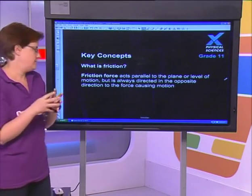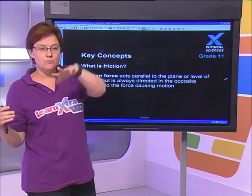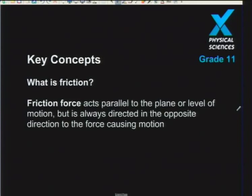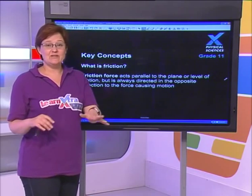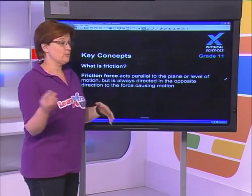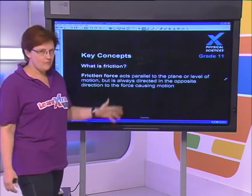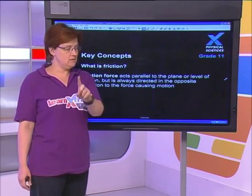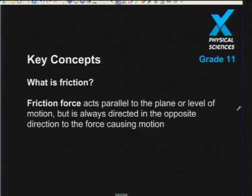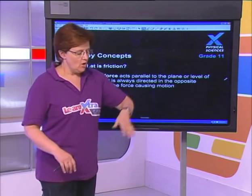Welcome back Grade 11s. Now we need to formalize what we've seen. What is friction? You've heard this term since primary school. We define friction as the force that acts parallel to the plane or level of motion, and is always directed in the opposite direction to the force causing motion. This is really important — even on the slope we just used, friction goes along the slope but opposes the direction of movement.